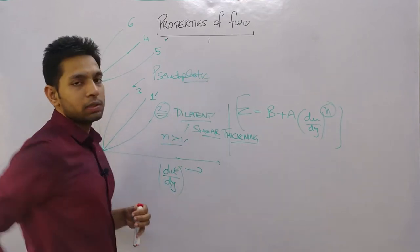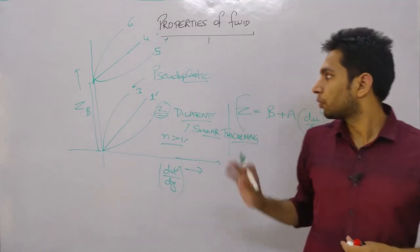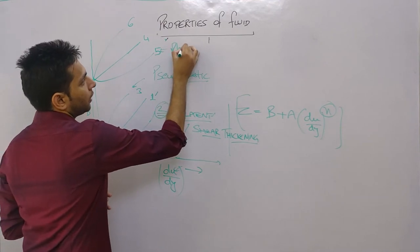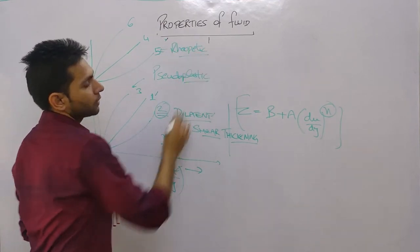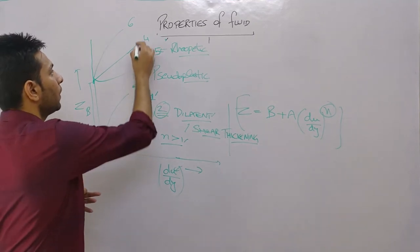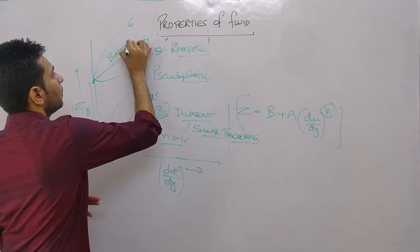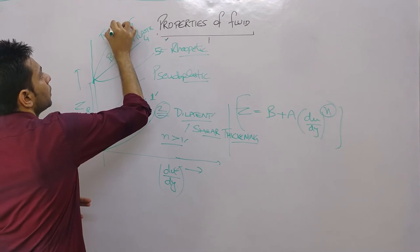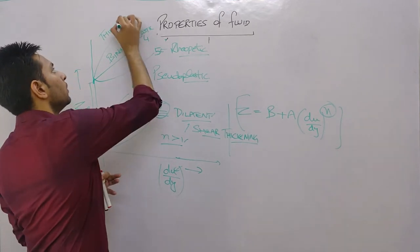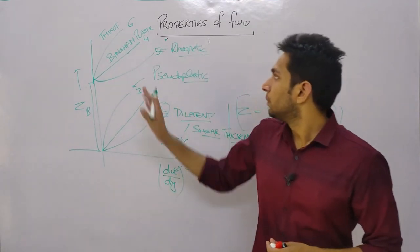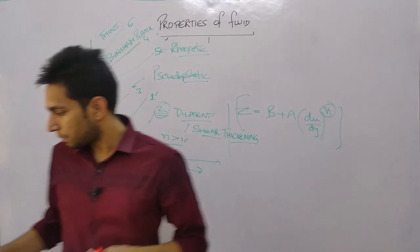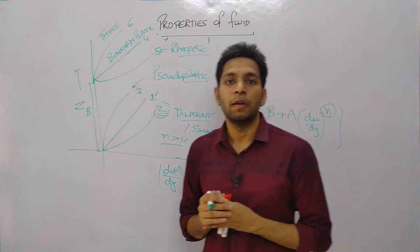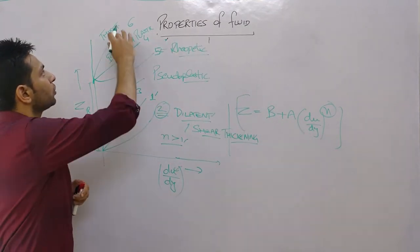The shear thinning fluid is represented by the pseudoplastic curve — examples include blood. Rheopectic fluid is another type — concrete is a rheopectic fluid example. Bingham plastic fluid and thixotropic fluid are additional classifications you need to remember.